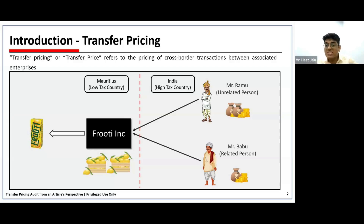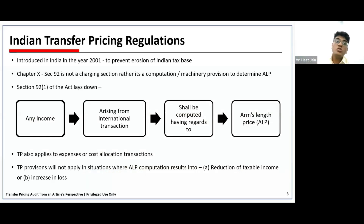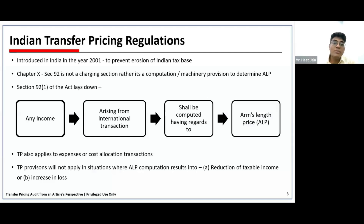This is the concept of profit shifting, wherein global MNCs structure their group and set transfer pricing policies in such a manner that profits are shifted gradually to jurisdictions where taxation is usually very low compared to jurisdictions where taxes are high. Transfer pricing is based on this concept of profit shifting and erosion of tax base. Transfer pricing regulations in India were introduced in the year 2001 with the sole intent of preventing erosion of the Indian tax base.